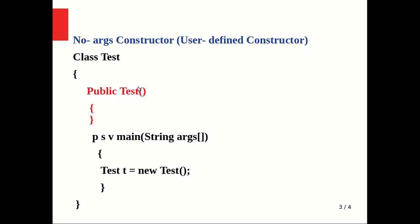Since no argument is present, it is called a no-argument constructor, and it is user-defined. Inside the class there is also a main method where we create an object of this class. As the object is created the constructor is called. Since the user has defined this constructor, the compiler will not insert any constructor by itself, because the user has already defined a no-argument constructor.